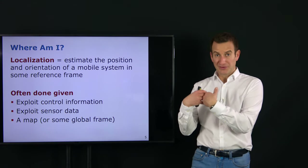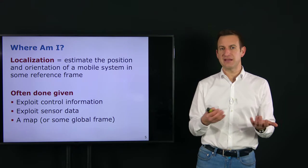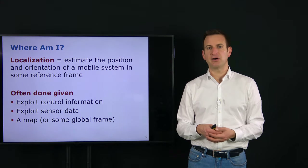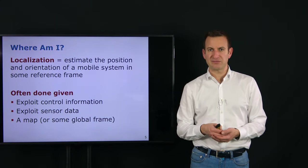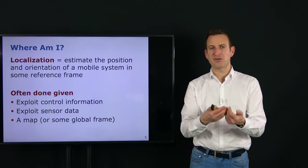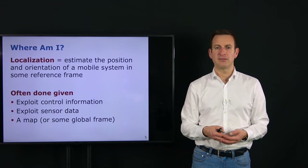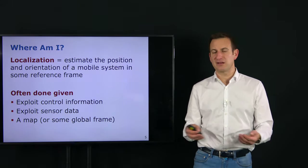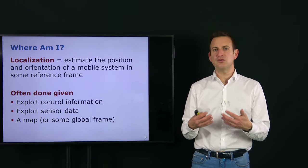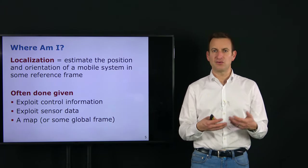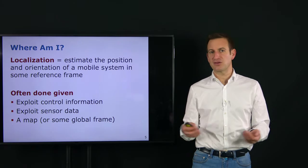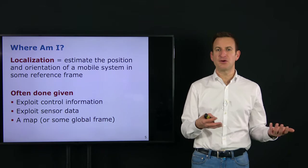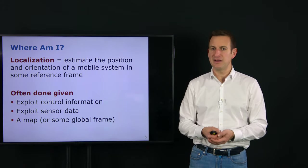We want to localize with respect to a map, based on sensor information, assuming we have a mobile system that moves through the environment. We want to estimate the platform's XY or XYZ location as well as its heading in some reference frame. We typically assume to have information about what commands the platform is executing — for example, steering angle and gas pedal input for an autonomous car, or odometry commands for a mobile platform. Sensor data such as cameras, laser rangefinders, GPS, or IMU are used to localize ourselves.